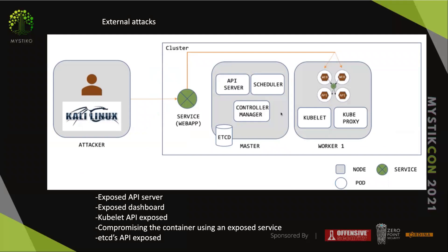Now let's start with possible attacks. The main external attack vectors are: the API server if it's exposed to the internet, the exposed dashboard — which is more common than you'd think and has led to many enterprise compromises — and the kubelet API.